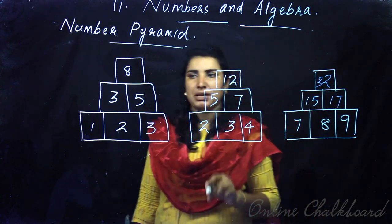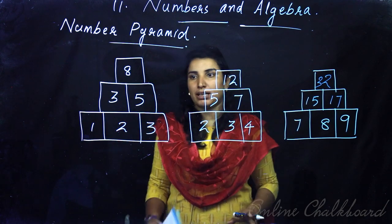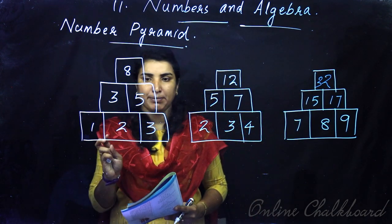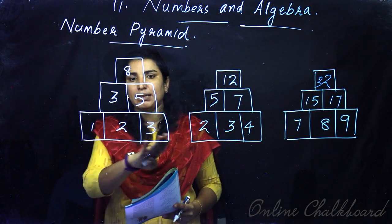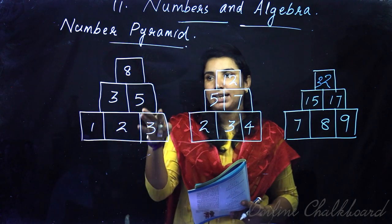32. Think about it. In these three pyramids, what do you say? In this bottom row, any numbers.